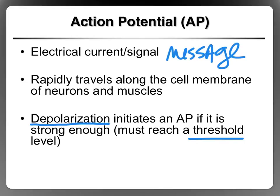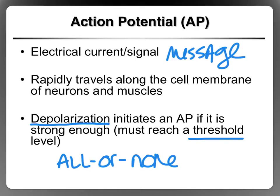We've talked about all-or-none, and all-or-none means a few things. It means that a motor unit is going to fire completely or not at all. Also, you're not going to get a partial action potential. The depolarization is either going to be strong enough to cause an action potential or it's not going to be strong enough. If we get an action potential, we get that electrical current that travels along the neuron and is carried to some target tissue to send a message to that target tissue.